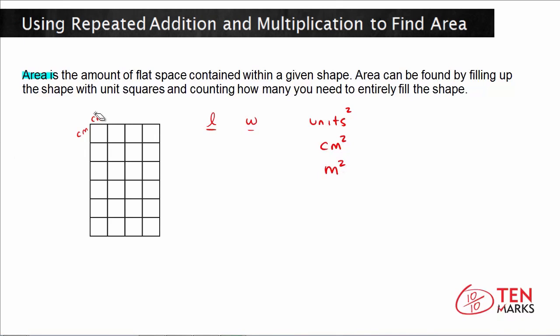Now let's talk about how we would find the area of this rectangle here that I've drawn. We'll go with centimeter squares as our unit. What you can do with area of a rectangle is you can go through and count all the unit squares, or you can use multiplication. For a rectangle, you multiply the length by the width to find the area.